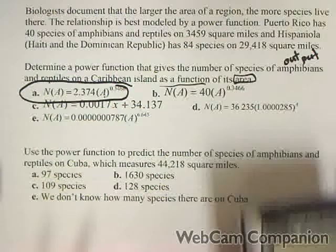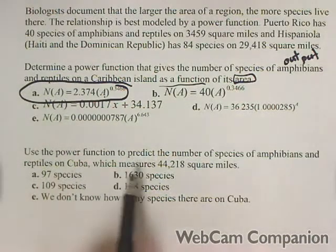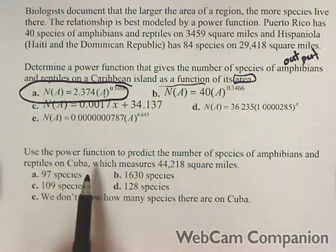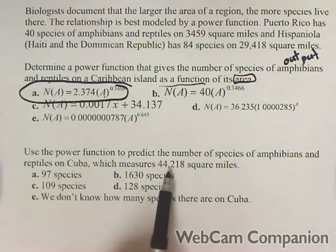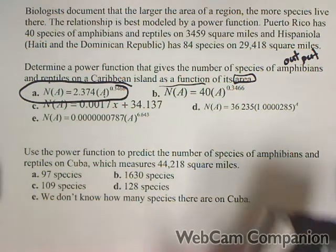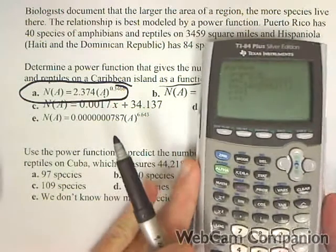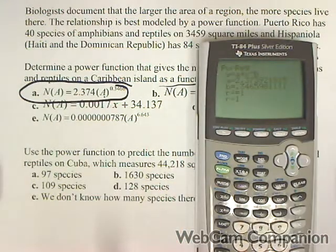Now they want us to use the power function to predict the number of species of amphibians in Cuba, which has 44,218 square miles. I'm going to show you how we can do that in the calculator without doing a whole bunch of extra work.